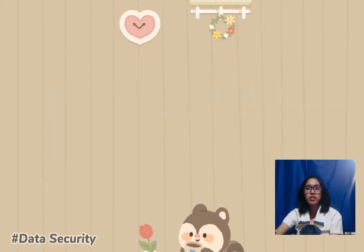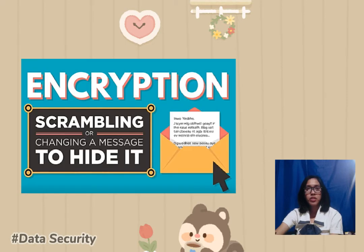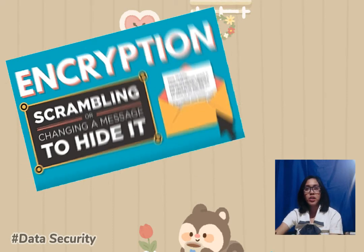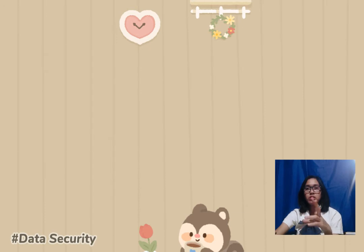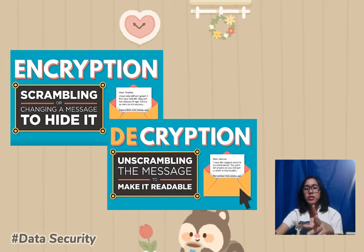There is also what they call encryption and decryption. Encryption is the process of scrambling or changing a message to hide it, while decryption is the unscrambling of a message to make it readable again.